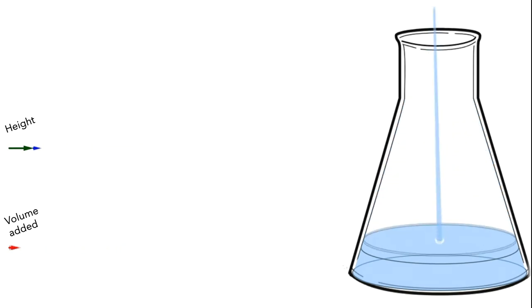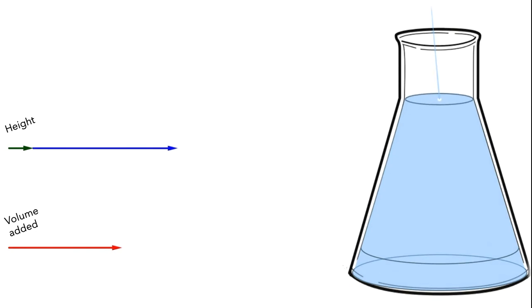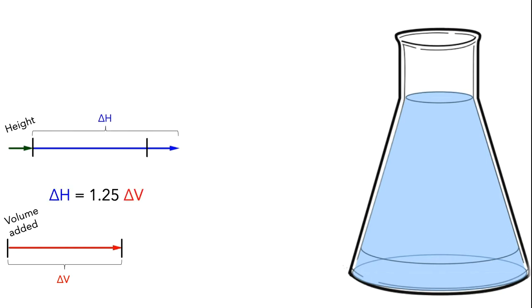Let's rewind this to the start of the pouring. As the animation plays, think about how the height — the length of the blue bar — and the added volume — the length of the red arrow — are changing with respect to each other. I'll also add black bars to indicate the change in volume, so the distance between the bars is showing the amount of change in volume. We can copy this length onto the height bar. Now, if we think about the amount of change in height, we can see that delta H is roughly one and one quarter times as large as delta V.